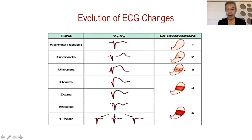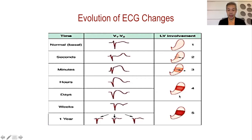When Q waves occur — for example in a patient who is one year into a myocardial infarction — it is already a transmural scar that cannot be reversed. Unlike that scenario, if you give thrombolysis even with a small Q wave present, you would be able to save myocardium and muscle in that patient and prevent heart failure later on.